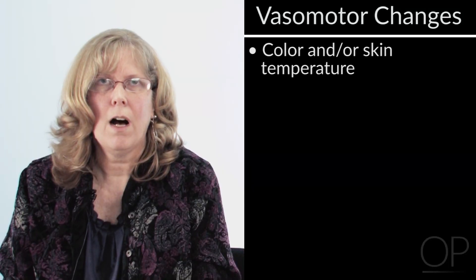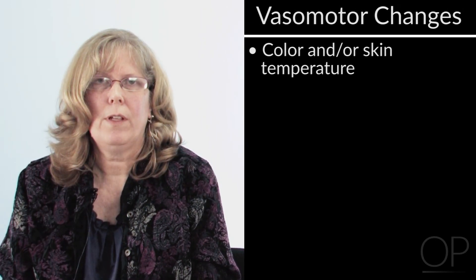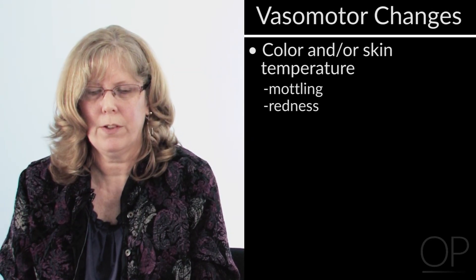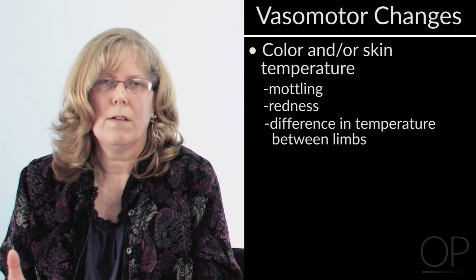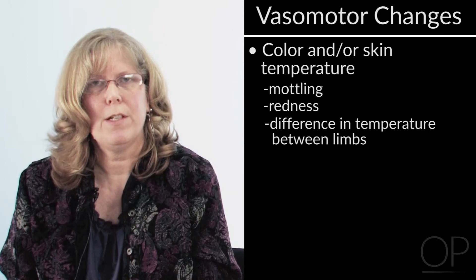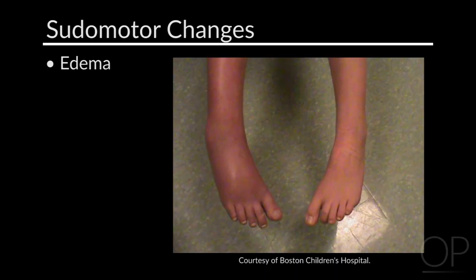The vasomotor changes that we see are changes in color and or skin temperature. Frequently we see mottling and redness on the affected body part. We also see that the limb may be warmer or colder to touch, and it may be different on the affected side of the body. The pseudomotor changes consist of edema, which is the most frequent symptom seen in children with chronic pain, and or sweating of the extremity.